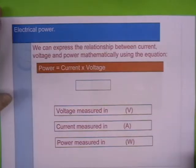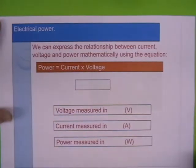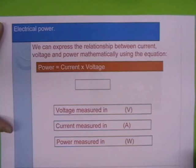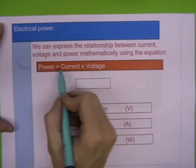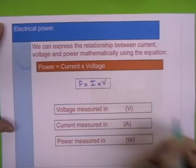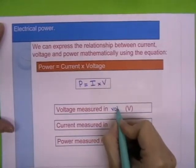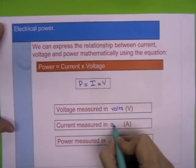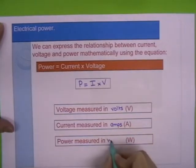Electrical power is calculated by multiplying current by voltage. So power equals current times voltage, or P equals I times V. Voltage measured in volts, current measured in amps, and power measured in watts.